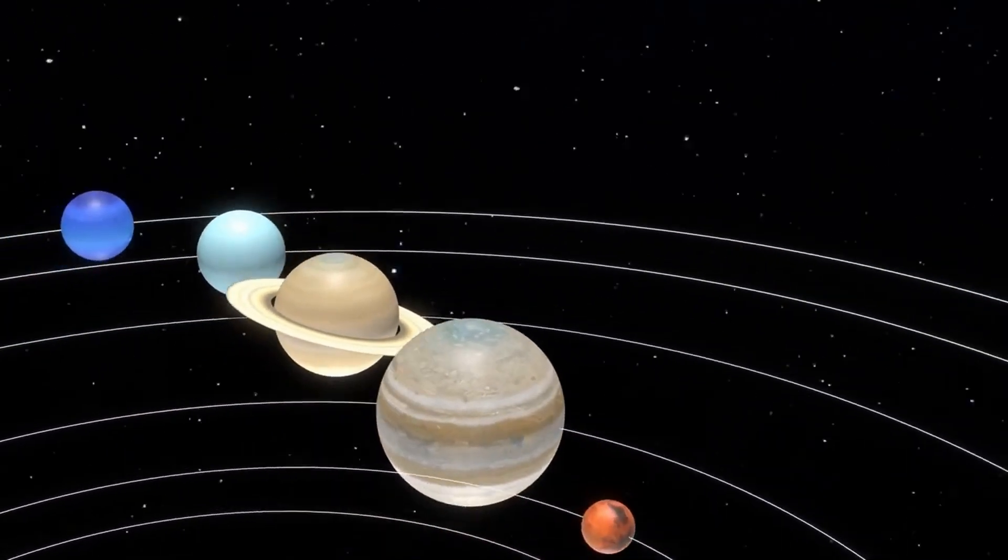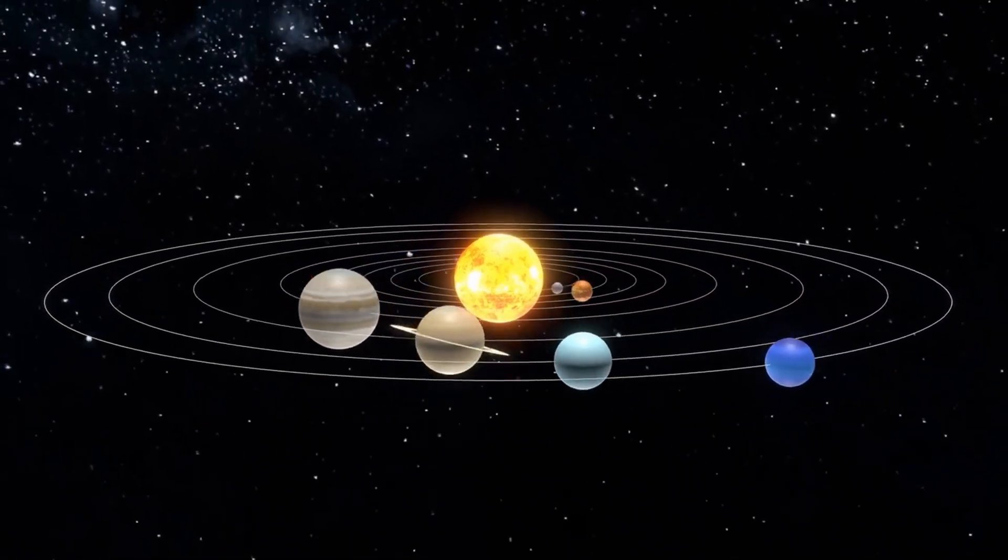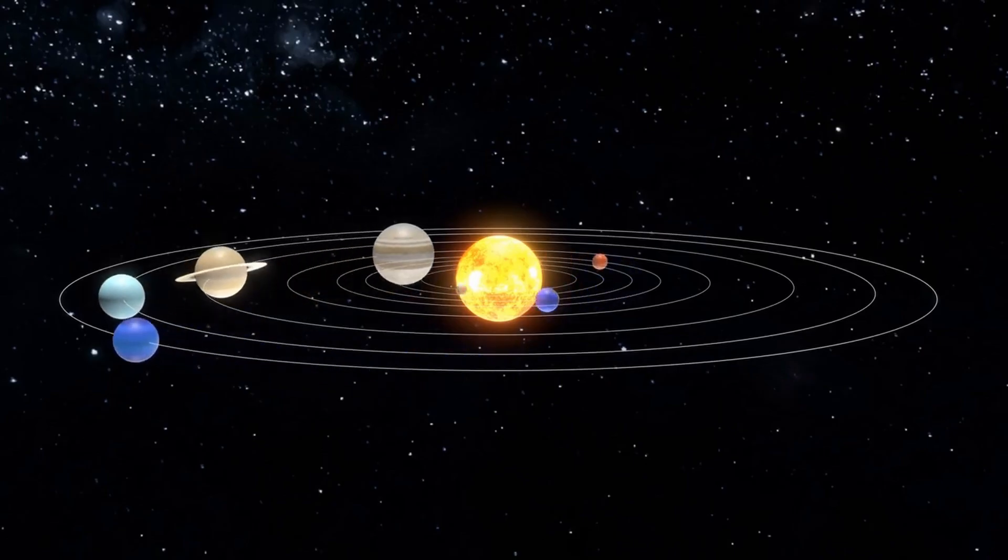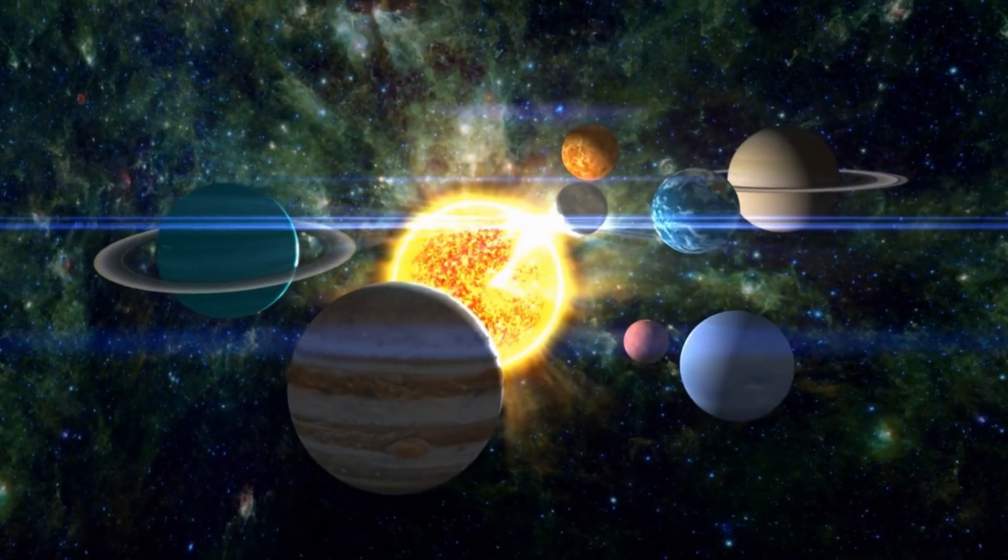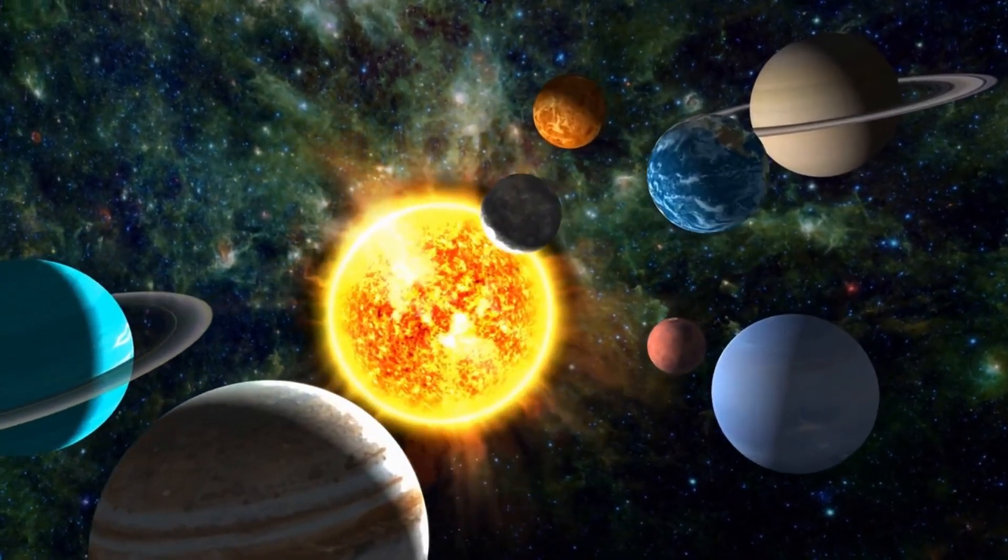Compare that to 3i Atlas. A jet that's been firing in the same direction for four months. A core that hasn't fragmented. A trajectory that bent toward Jupiter with accuracy that makes orbital mechanics engineers uncomfortable. One is random. One is not.